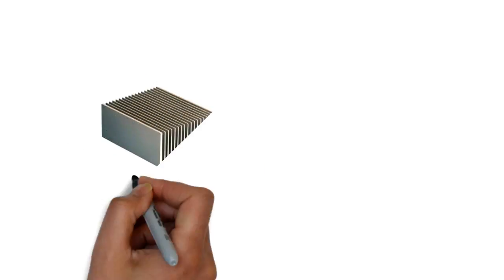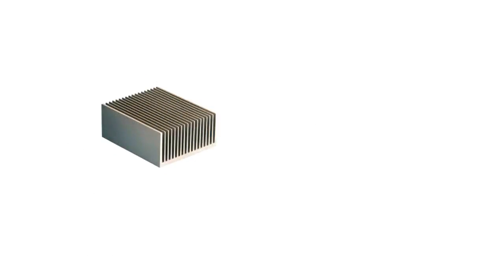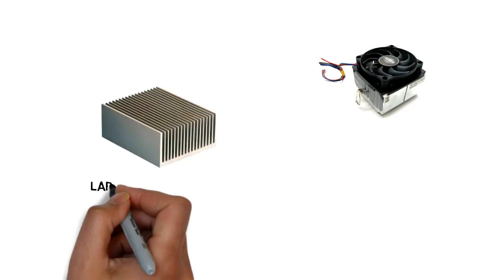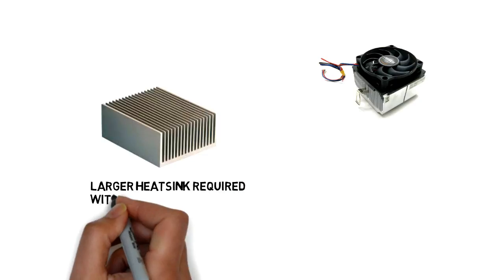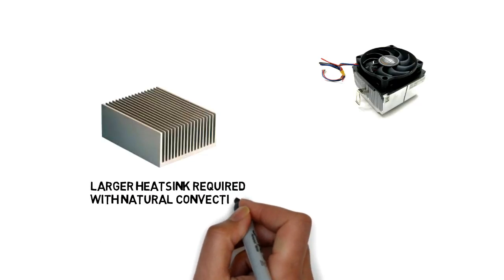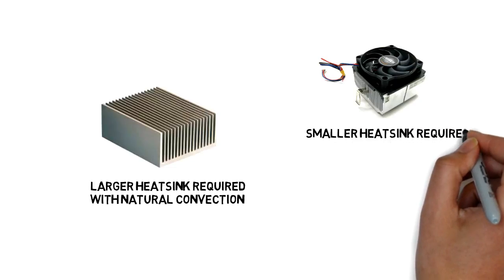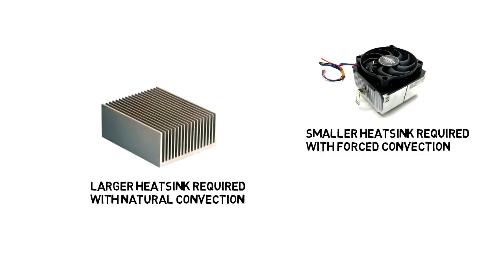Another thing is that if space is an issue, then to remove a certain amount of heat, we would require a larger heat sink that uses free convection or natural convection. But we can remove the same amount of heat with a much smaller heat sink with fan. That is if we are using forced convection, we can have a much smaller heat sink compared to a much larger heat sink that would be required if we were to dissipate the same amount of heat.